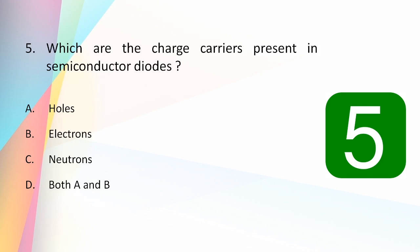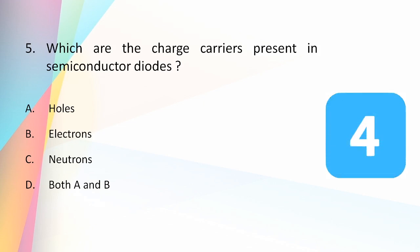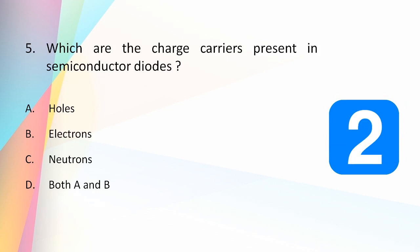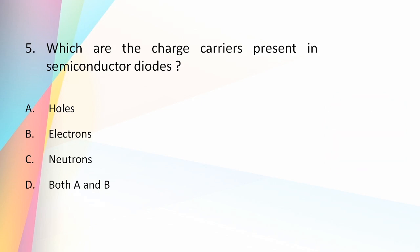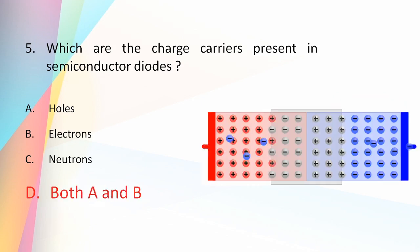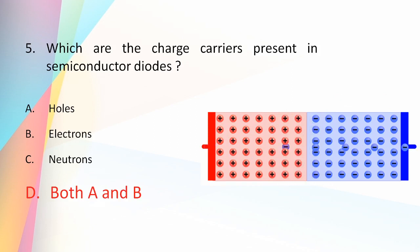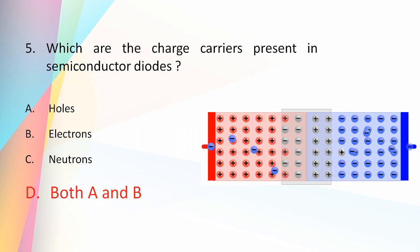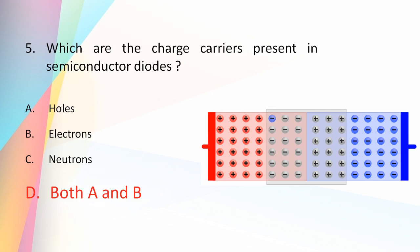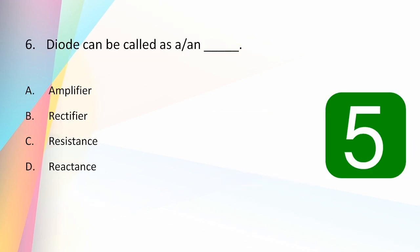The charge carriers present in semiconductor diodes are both holes and electrons. Semiconductors contain two types of mobile charge carriers: holes and electrons. In N-type materials, electrons act as majority carriers, and in P-type materials, holes act as majority carriers.